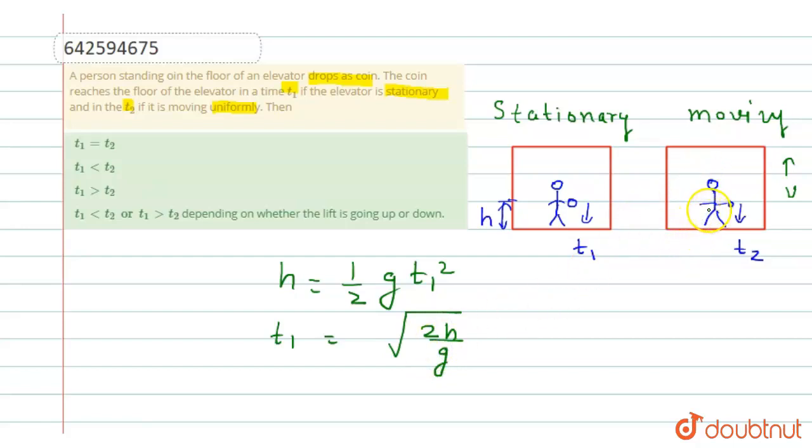Now in case 2, in the second case in which the elevator is moving with velocity v, let's assume an observer is standing here to solve the value of t2. And the elevator is at rest for this observer and we can say that it is an inertial frame. Inertial frame means force doesn't change. If force doesn't change, means acceleration doesn't change.